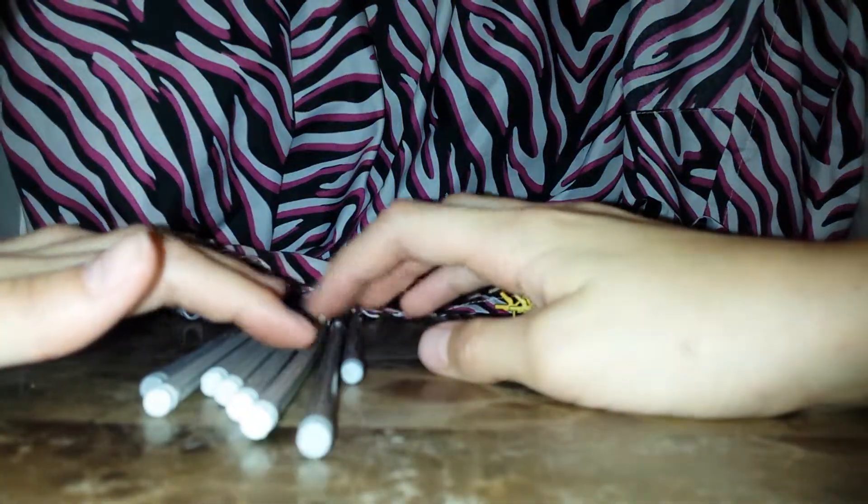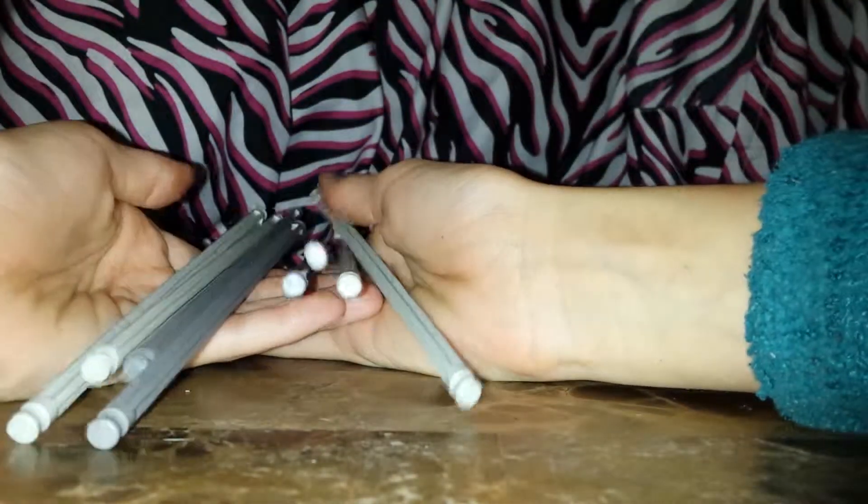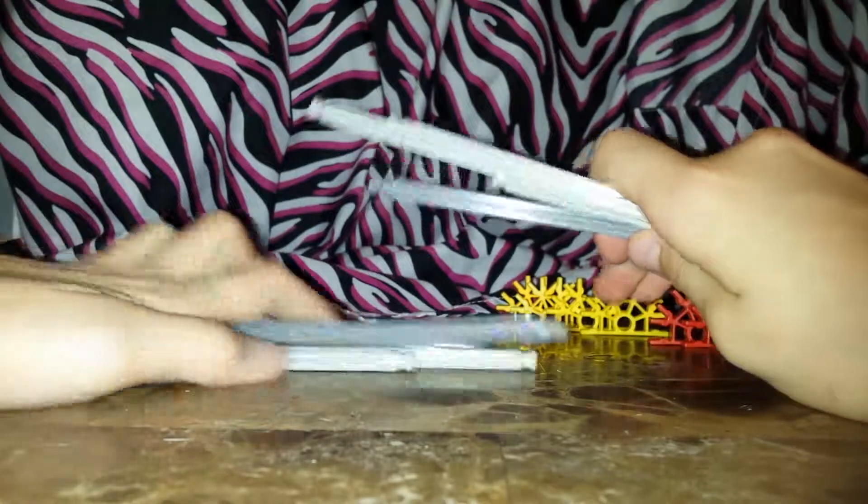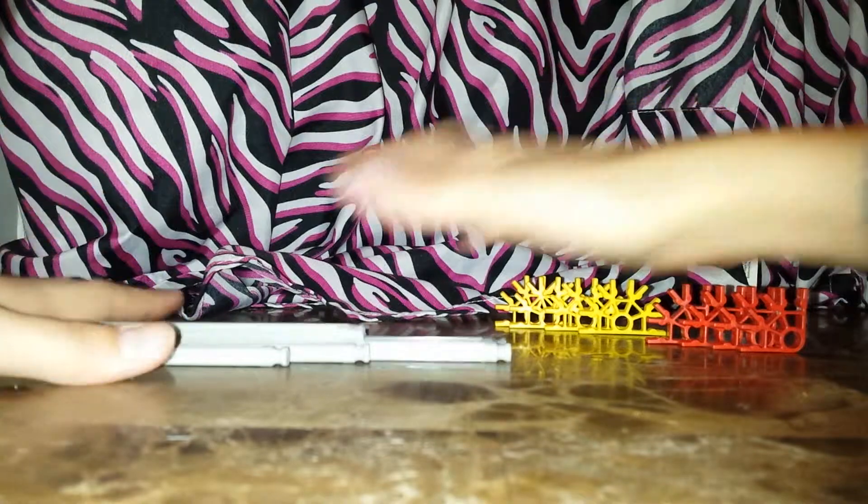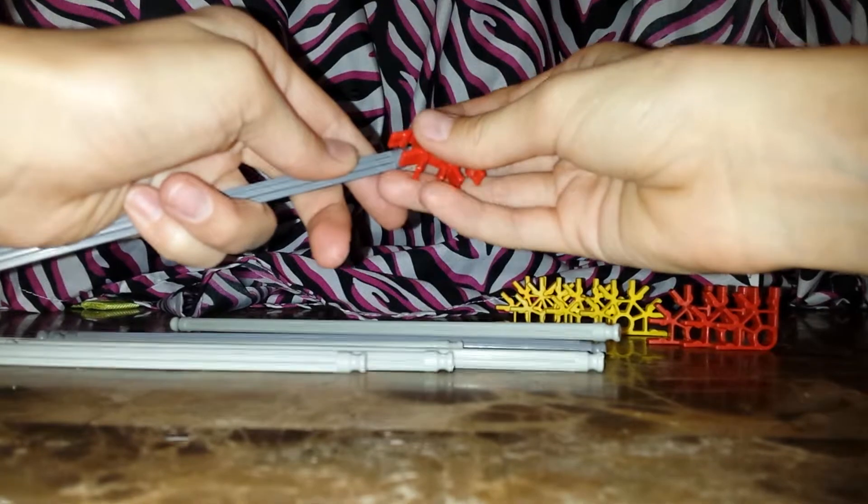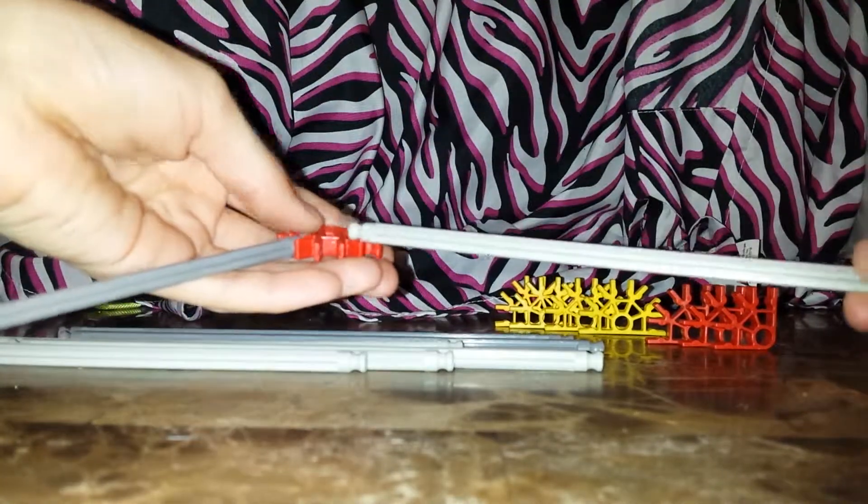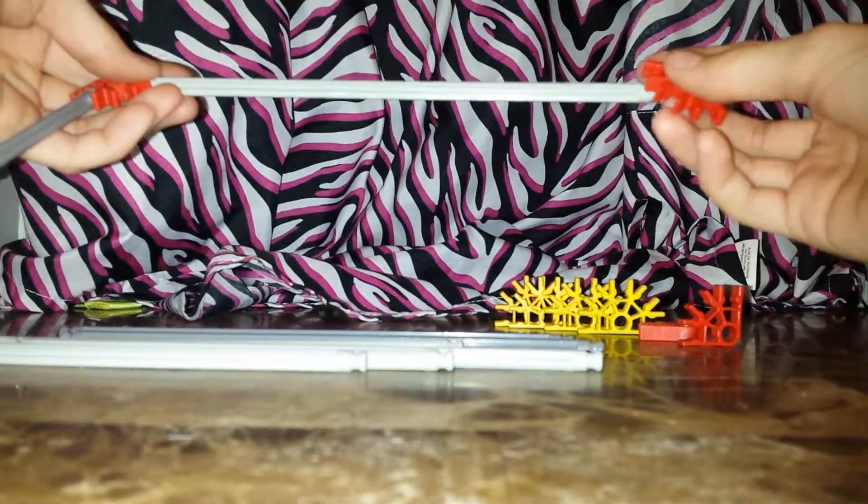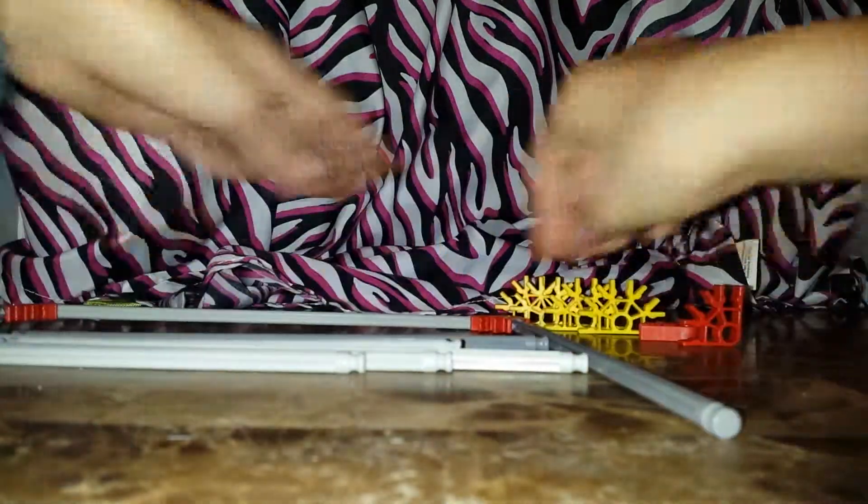Okay, so all you're going to need for this one is eight of the long, very long ones. You're going to need four red and four yellow. So, just going to put this on like that. This is a very big project or a big picture frame for big pictures, ones that you love.